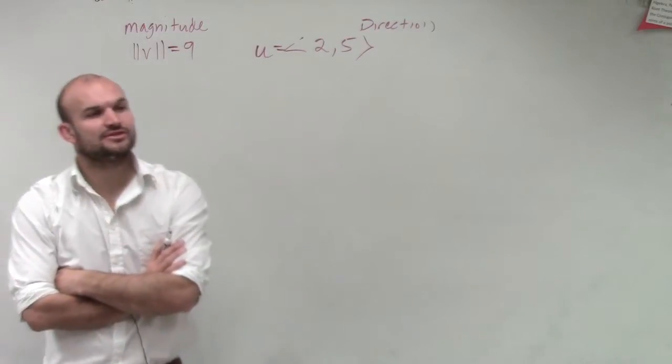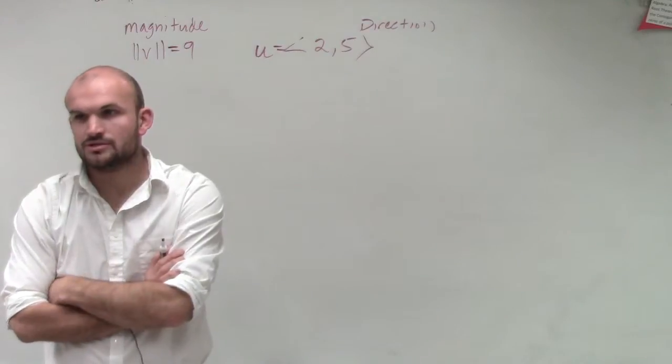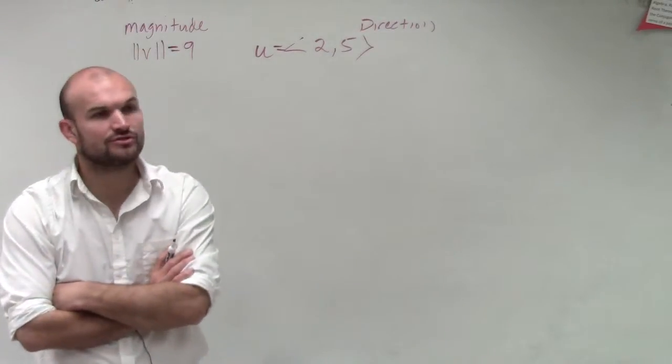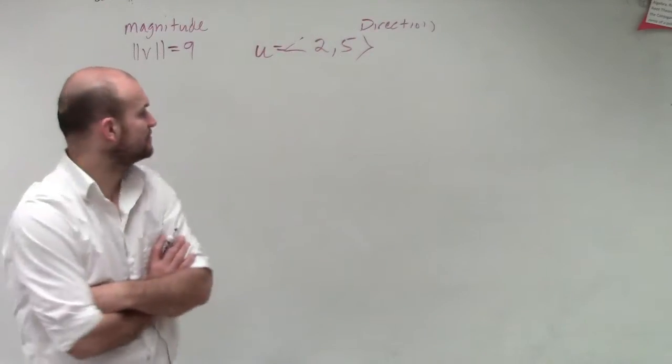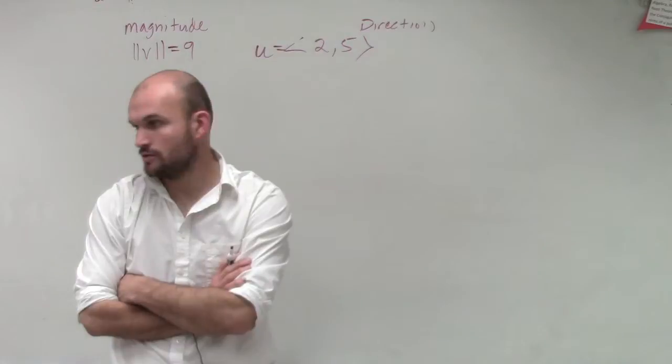But what we need to do is find the direction off of the unit vector of u. So, do we have the vector (2, 5)? Is that a unit vector? No, it's not a unit vector. Unit vectors have a magnitude of 1.